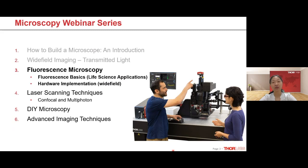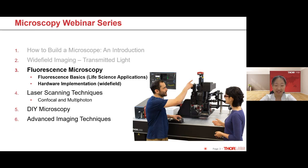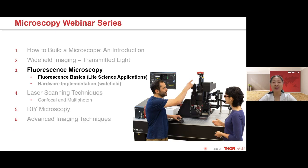This is the third talk in the 'How to Build a Microscope' webinar series. In our first and second webinars we discussed the basics of microscope design and transmitted light imaging. Today I'll be building upon those two previous talks and we'll focus on fluorescence microscopy, covering basic principles of fluorescence, a few applications in life sciences, and the hardware components used in the wide field microscope. We'll also have three more upcoming webinars on laser scanning techniques, DIY microscopy, and advanced imaging techniques.